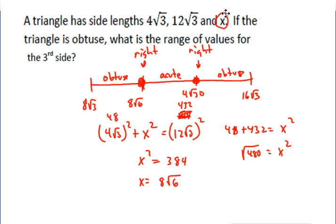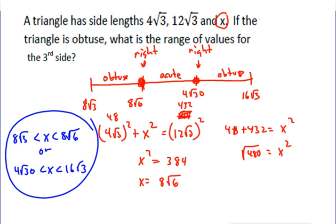So, where is it obtuse? It's obtuse here from 8√3 < x < 8√6. Or, if the value is 4√30 < x < 16√3. So, either range of values would give you a third side that would result in an obtuse triangle.